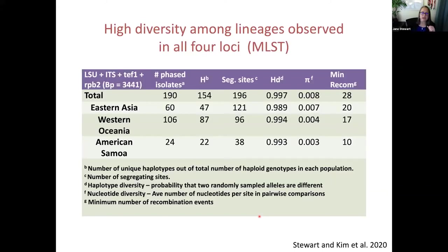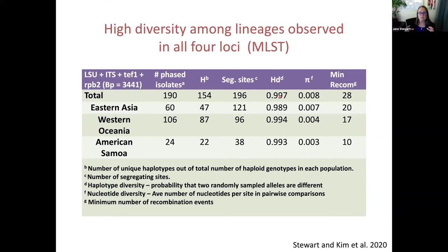We also looked at the amount of genetic diversity. When all isolates were combined, we had a haplotype diversity of 0.997 — a very high chance that any isolate picked would be different from all others. The Eastern Asian group had really high diversity, as did the Western Oceania and American Samoa groups. Our results concurred with the Taiwanese group's findings showing a lot of genetic diversity across the islands.